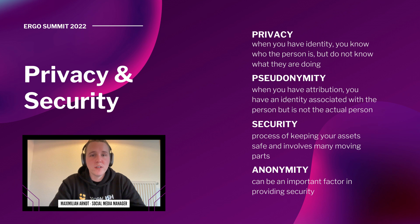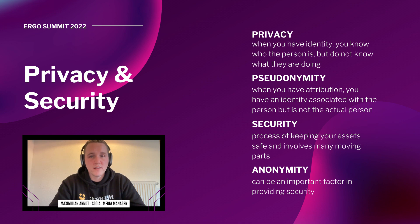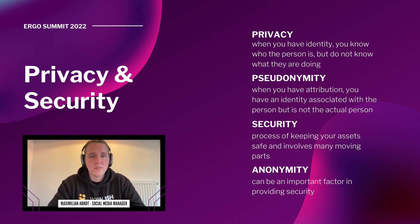Pseudonymity is when you have attribution — an identity associated with the person, but not the actual person. An example is Satoshi Nakamoto, who created Bitcoin. We have a name and his actions are public and not private, but not the real identity. This is similar to anonymity since the real identity is not associated with the actions, and it's not the same as privacy since the actions can be seen.